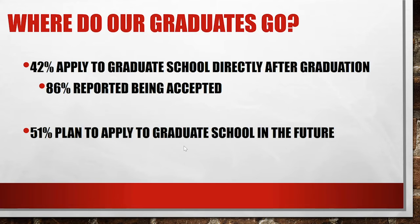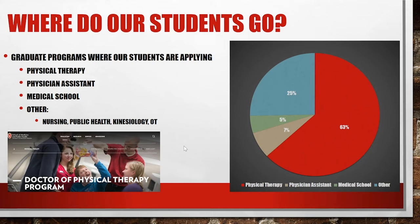One of the other questions that students and parents have is: what do I do with a major in kinesiology? Specifically for our Exercise and Movement Science students — we have cohorts of about 100 students, so at any given time we have 200 students. According to our exit survey, about 42% of our exercise and movement science graduates apply to graduate school directly after graduating, and of those, 86% report being accepted to a program.